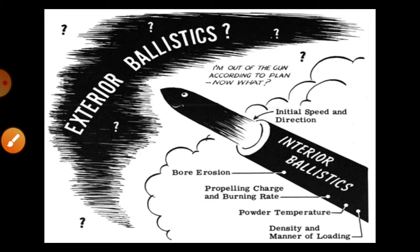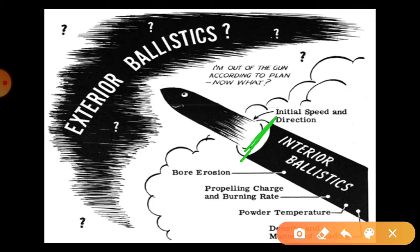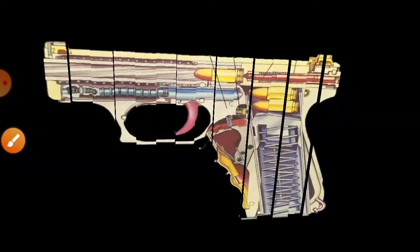जैसे ही आपकी bullet रहती है यह आपकी leave कर जाती है आपकी weapon के barrel को, आपके weapon का muzzle end जैसे ही leave करती है, वैसे ही आपका start हो जाता है external ballistics. इसके बाद से आपका internal ballistics खत्म हो जाता है and external ballistics start हो जाता है.